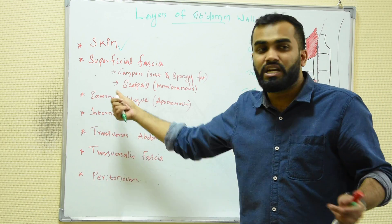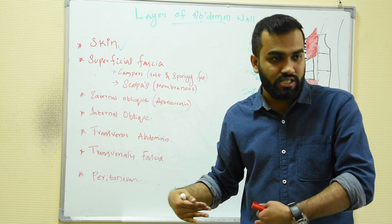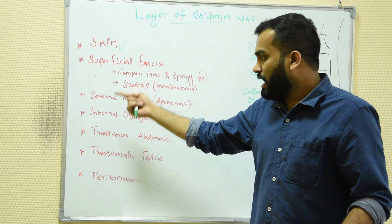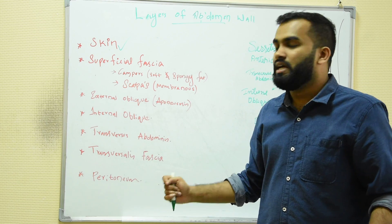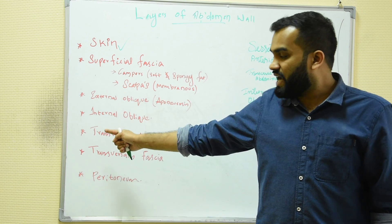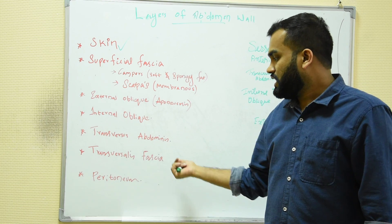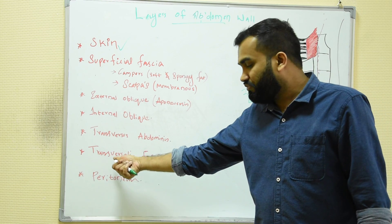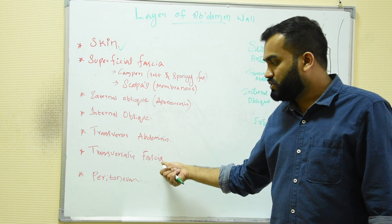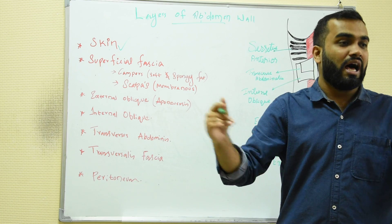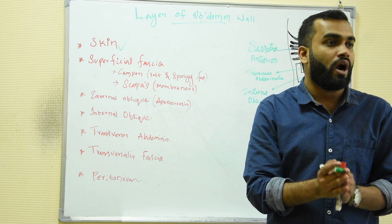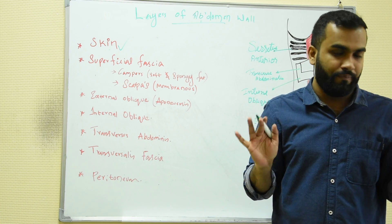After that we see the muscles. We go with external oblique first, then internal oblique, then transverse abdominis, then transverse fascia, and last we move to the peritoneum.